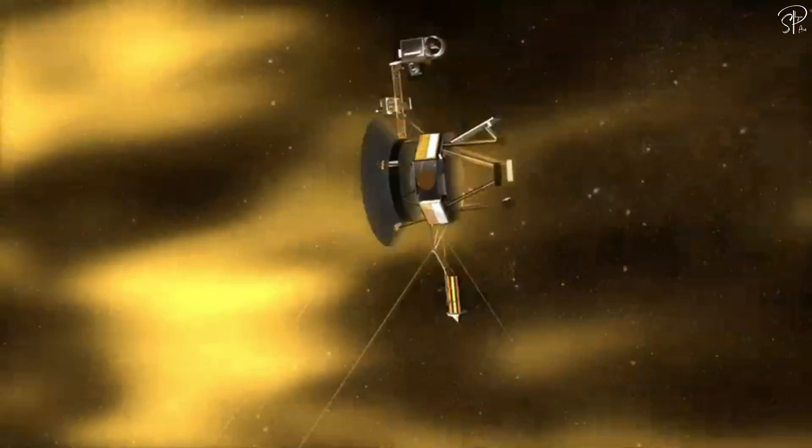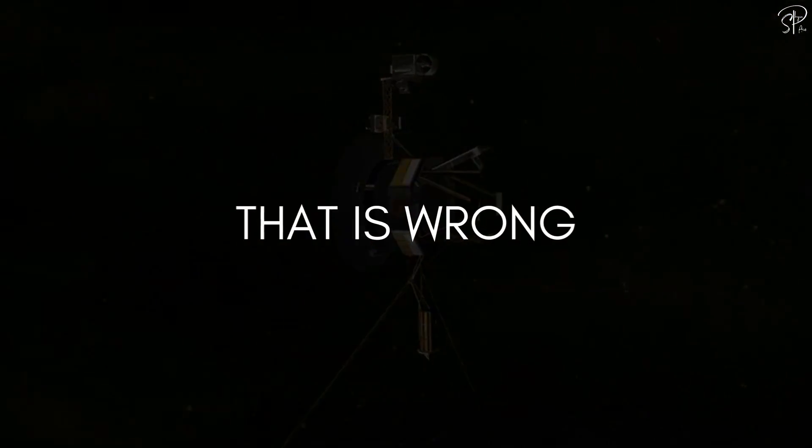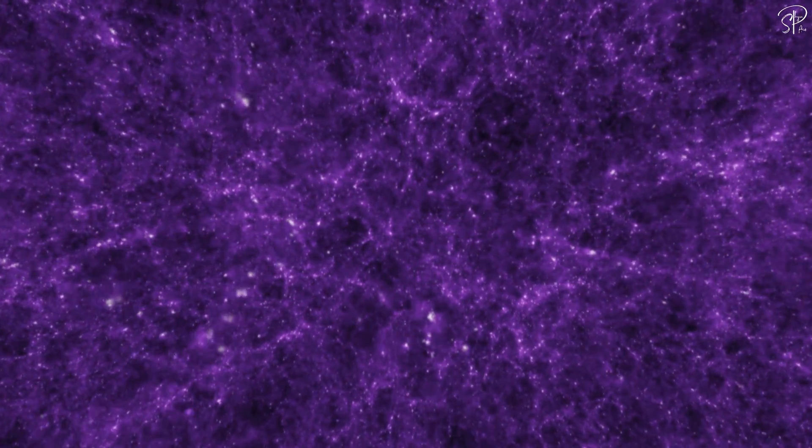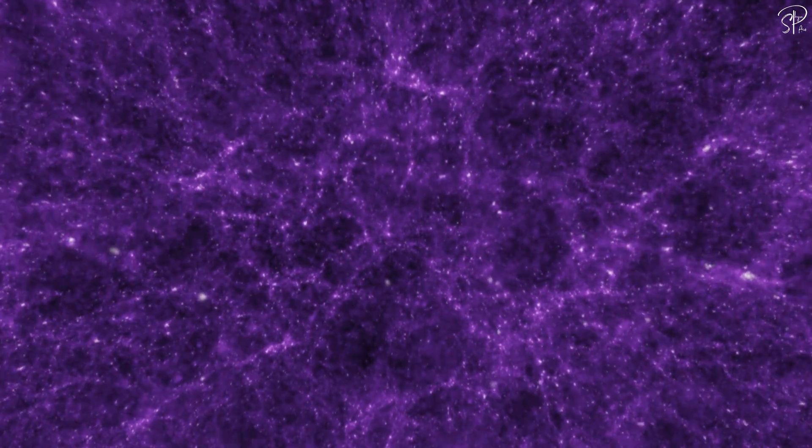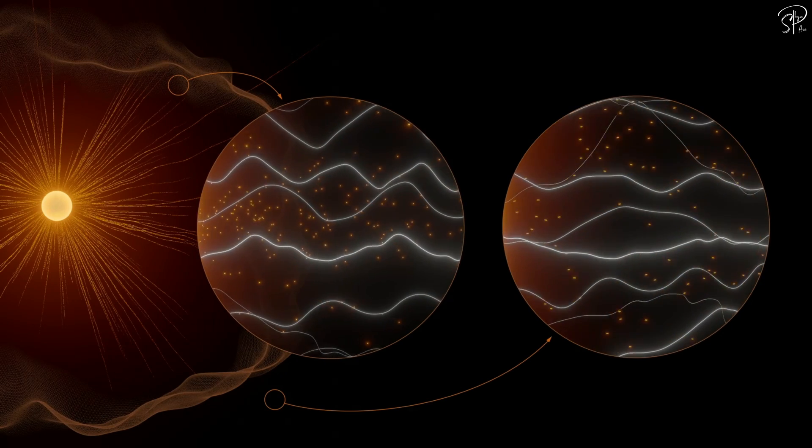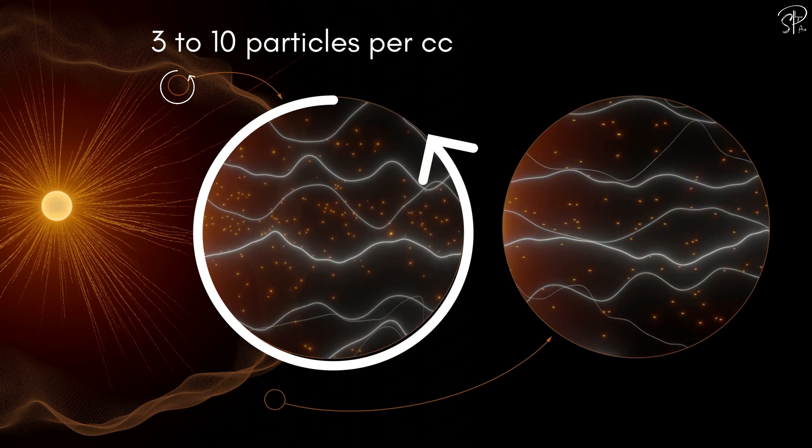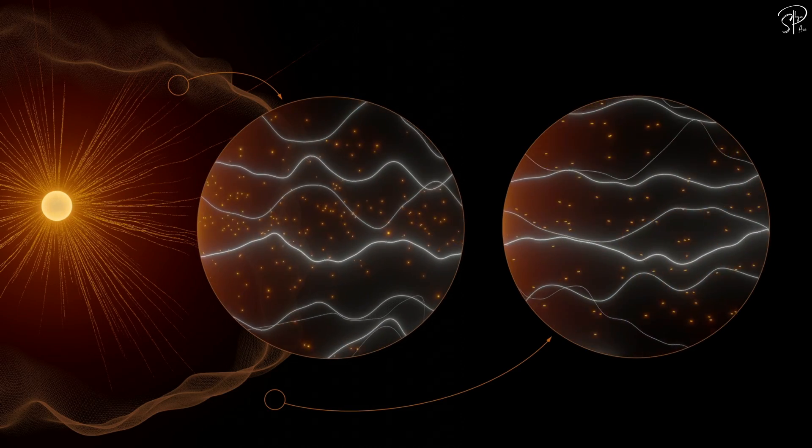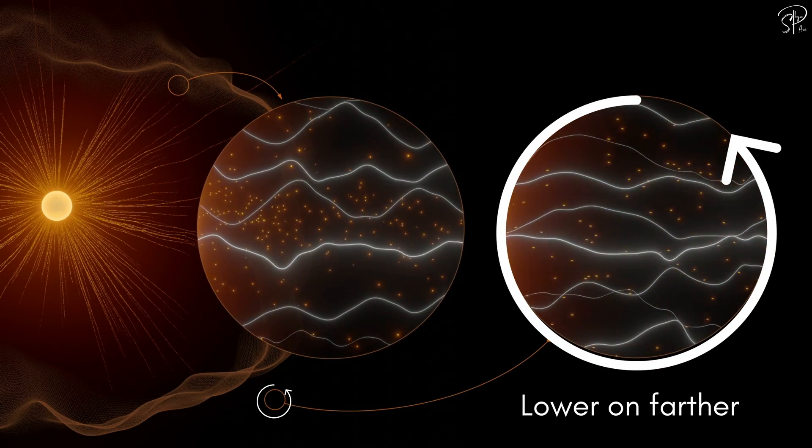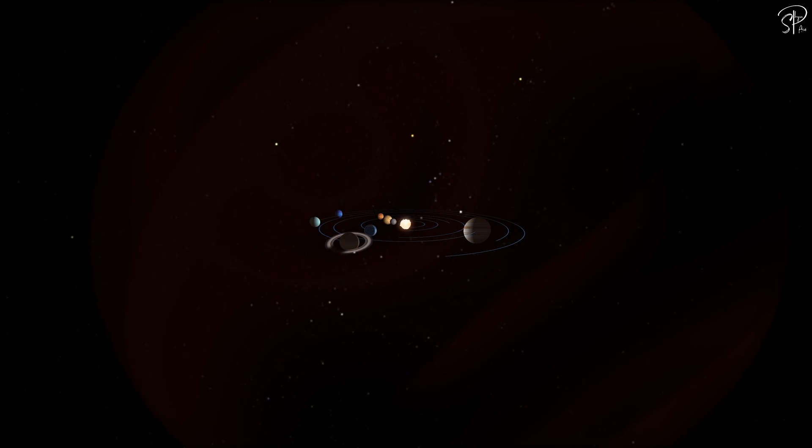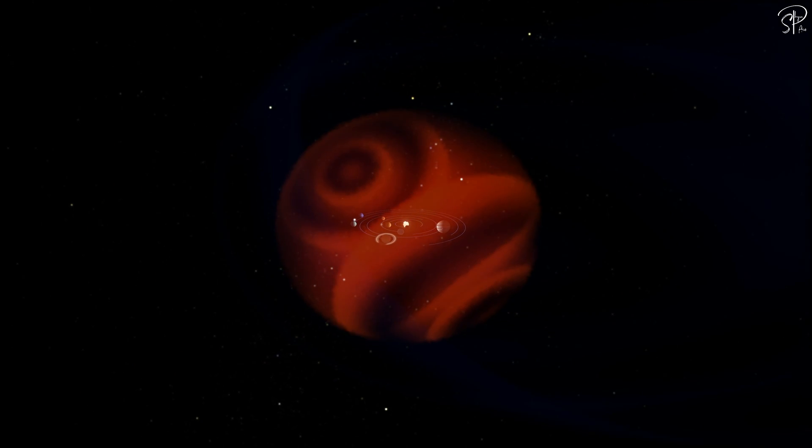Interstellar space is usually considered a vacuum, but that is not entirely true. The density of matter is extremely low, but it still exists. In the solar system, the solar wind has an average density of protons and electrons of 3 to 10 particles per cubic centimeter. But it is lower the farther from the sun. The smallest density of space is at the edge of the solar system.